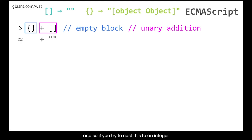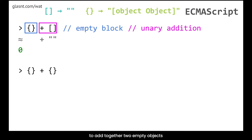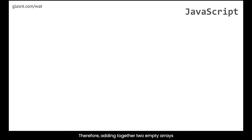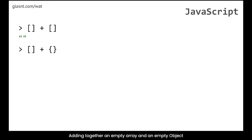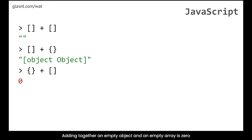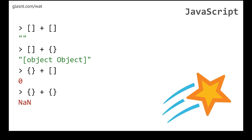So the rest of the operation becomes a unary addition, casting the empty string to an integer, which gives zero. Similarly, adding two empty objects: the first part is ignored, and the second part tries to cast 'object object' to a number — which fails because 'object object' is not a number. Therefore: two empty arrays = empty string; empty array + empty object = 'object object'; empty object + empty array = 0; two empty objects = NaN.